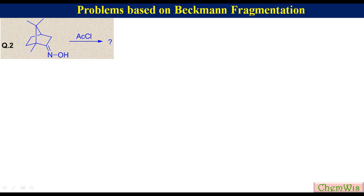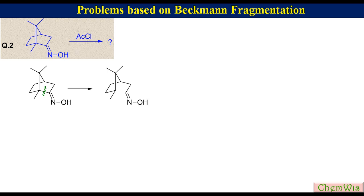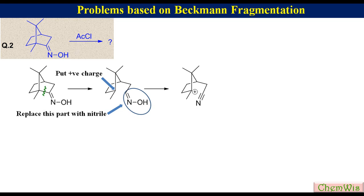Question 2: Write down the structure of the product when camphor oxime is treated with acetyl chloride. In camphor oxime, the group trans to the hydroxyl is attached through a quaternary carbon, so it will undergo Beckman Fragmentation due to the stability of the tertiary carbocation formed after C-C bond cleavage. Using the short method: break this C-C bond, put a positive charge here, and replace this part with nitrile to get the cationic nitrile. Beta proton elimination will give the Beckman Fragmentation product.